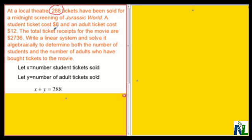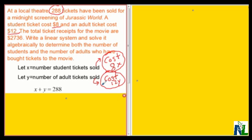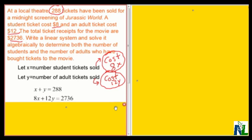Because the cost of a student ticket is $8, I can represent the total cost of the number of student tickets sold as 8X, or 8 times X. In a similar fashion, since the cost of an adult ticket is $12, the total cost of the number of adult tickets sold can be represented by 12Y, or 12 times Y. The total ticket receipts for the movie are $2,736. So the second equation will be 8X plus 12Y equals $2,736 — the total cost of the student tickets added to the total cost of the adult tickets comes to $2,736.